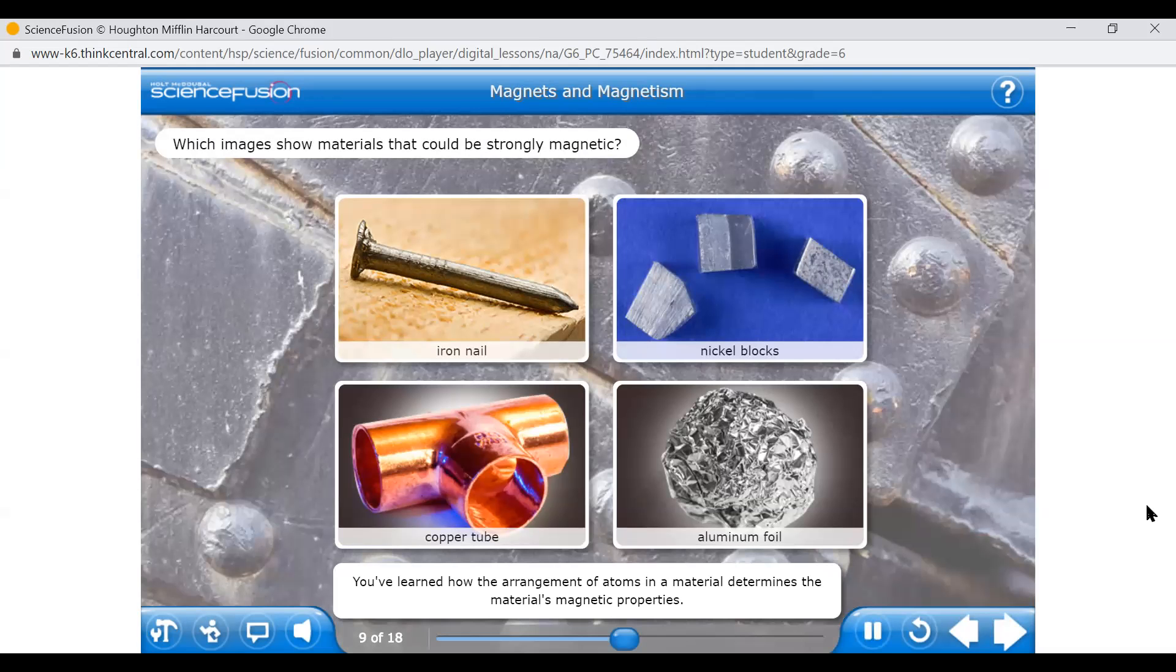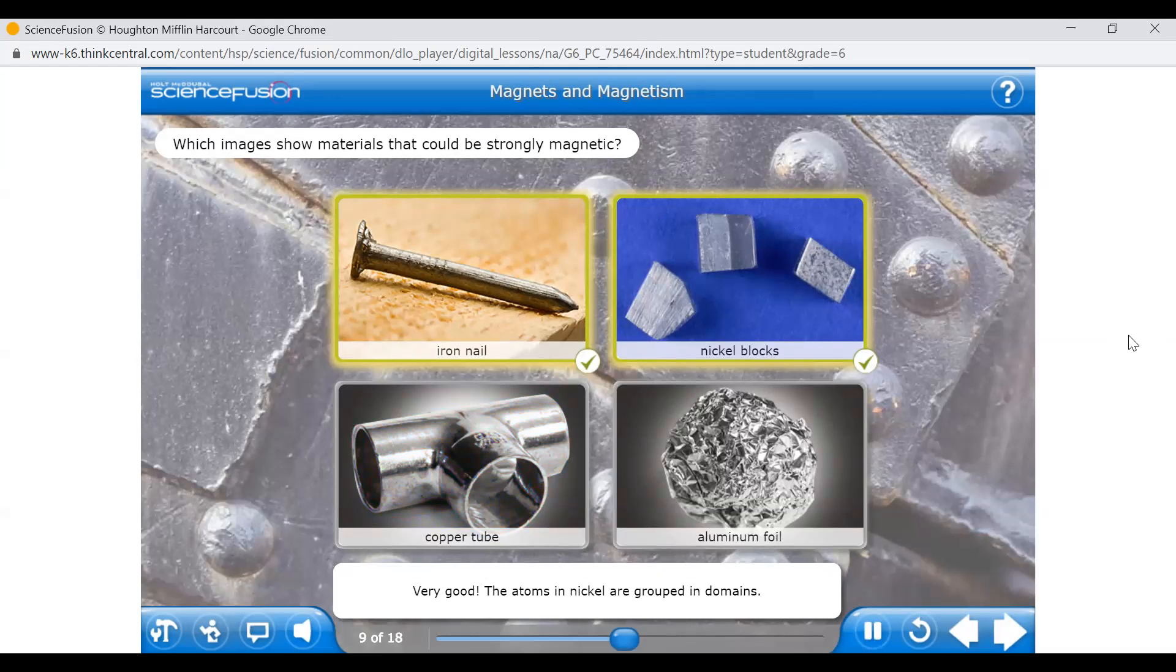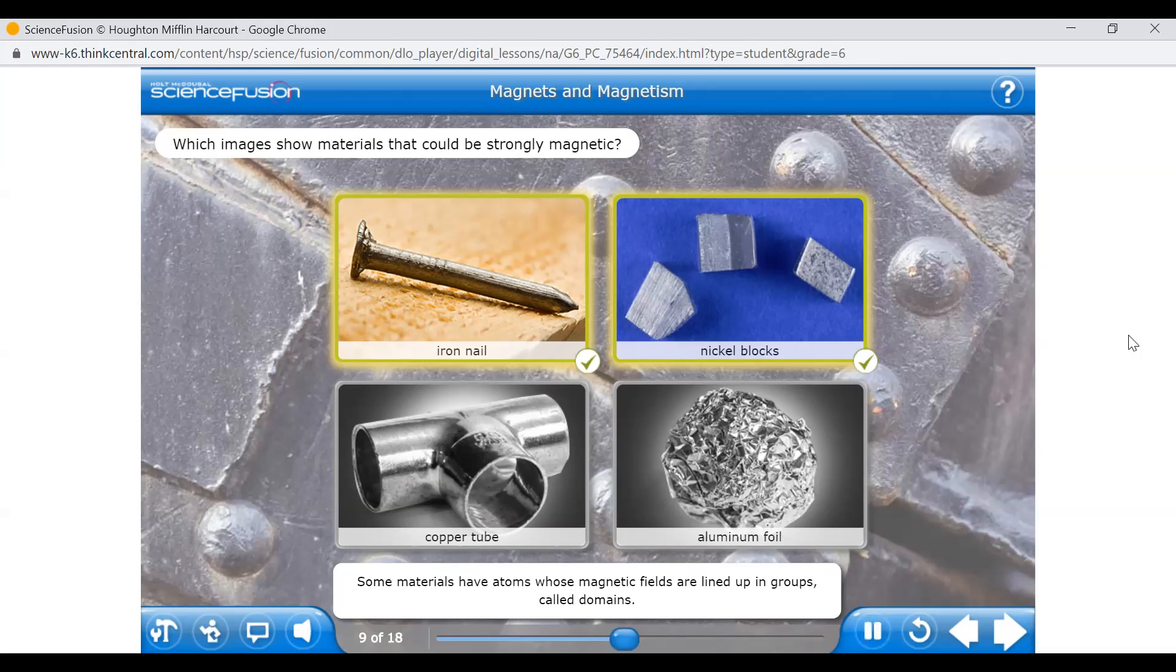You've learned how the arrangement of atoms in a material determines the material's magnetic properties. Look at the pictures. Click the images that show magnetic materials. Excellent! The atoms in iron are grouped in domains, so their magnetic fields line up. This causes iron to be strongly magnetic. Very good! The atoms in nickel are grouped in domains. This causes their magnetic fields to line up, making it possible for the metal to be strongly magnetic. Some materials have atoms whose magnetic fields are lined up in groups called domains. Iron and nickel have atoms arranged in domains, but copper and aluminum do not. Materials with domains can be magnetic or become magnetic. To make a material magnetic, many of the domains must be lined up in the same direction.